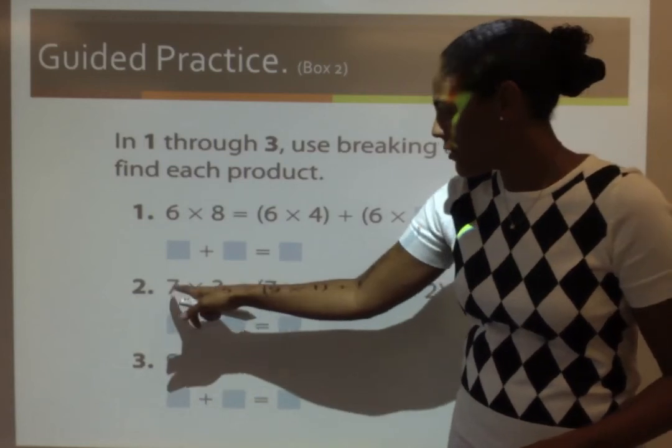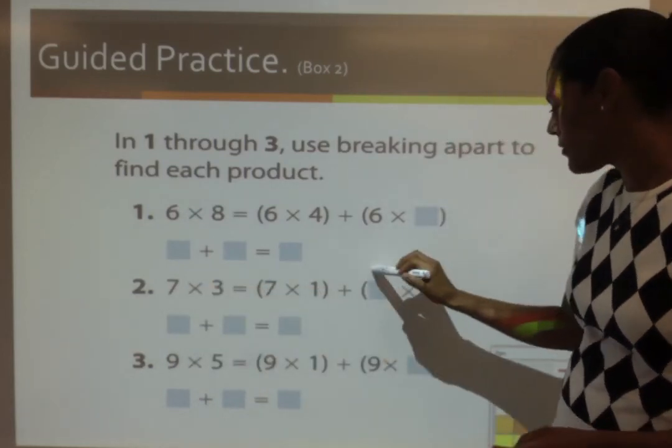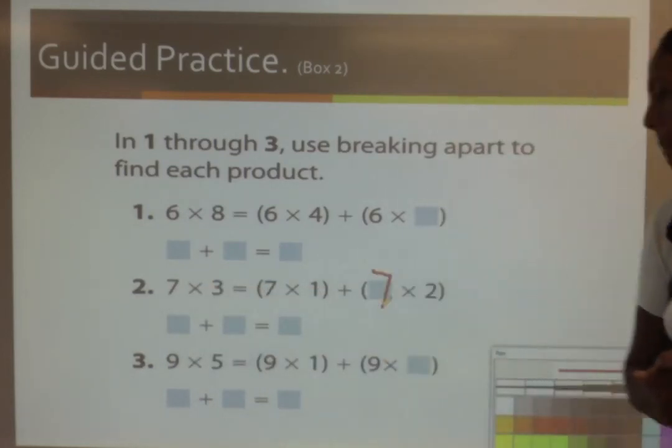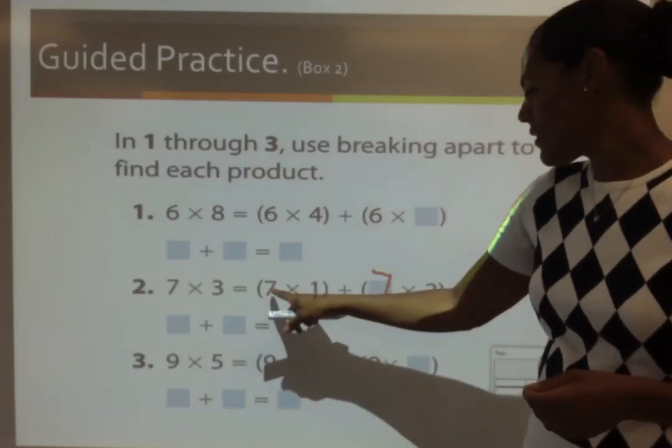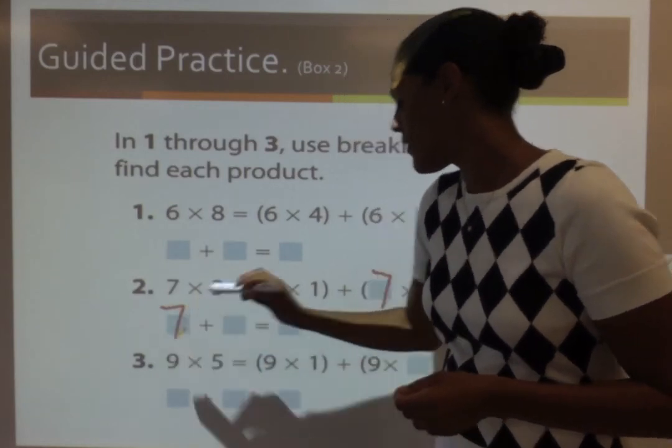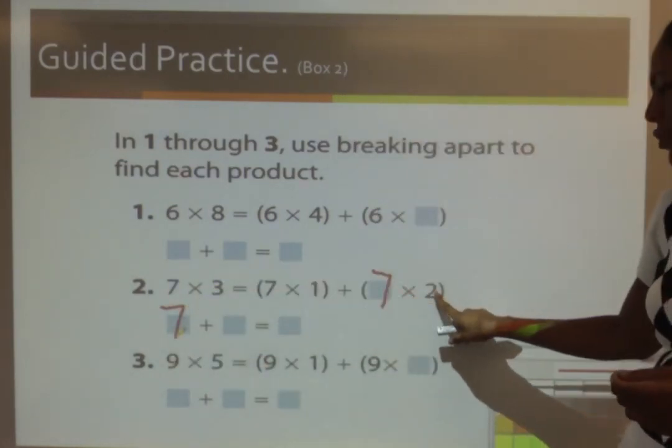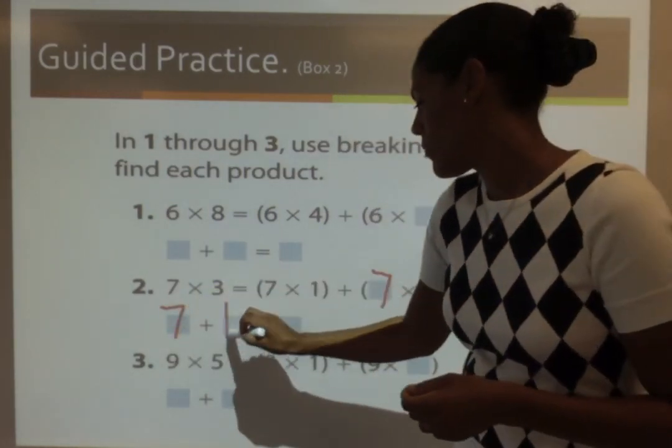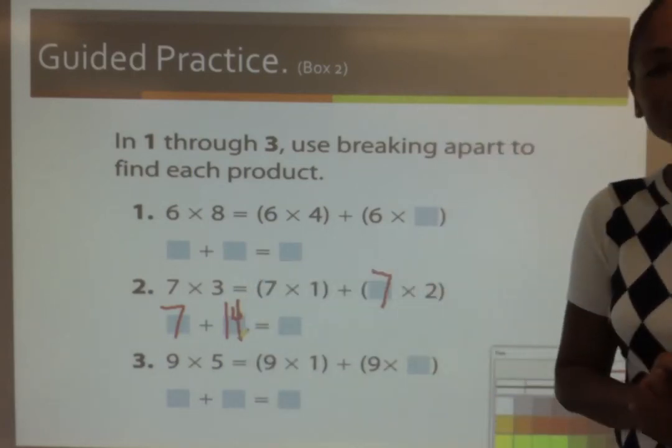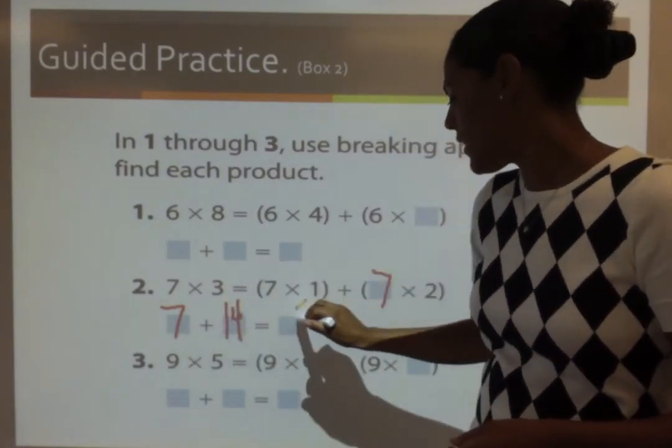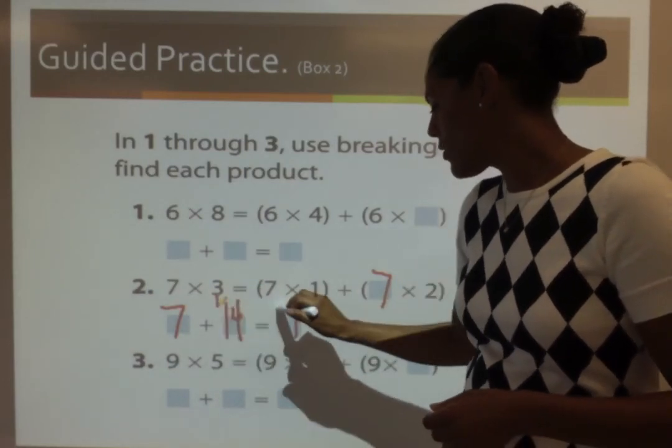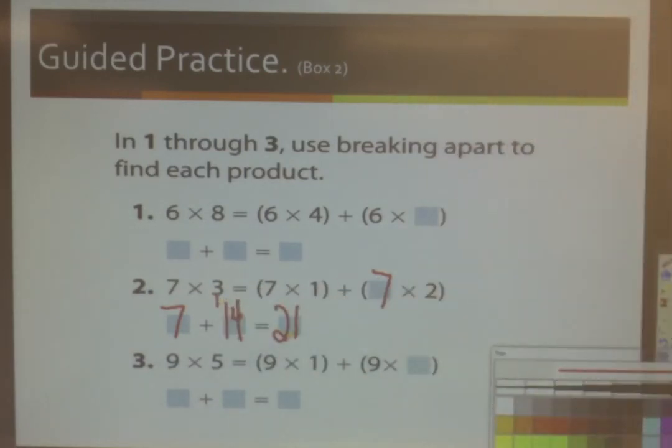So, I have to fill in this last part with 7. So, 7 times 1 is 7. And 7 times 2 is 14. And 7 plus 4 is 11. Regroup. 21.